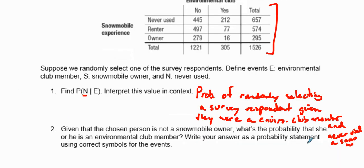To figure this out, given they're in environmental club members, this is going to be the yes column. Given they're here, what's the probability they never used a snowmobile? We write this out as probability of N and E over the probability of E.